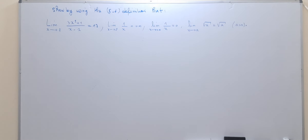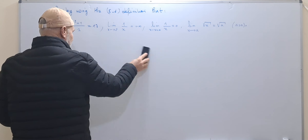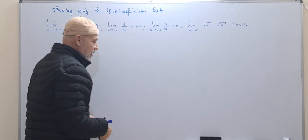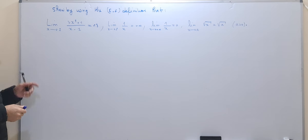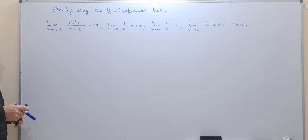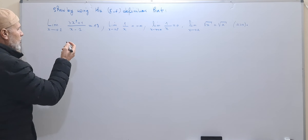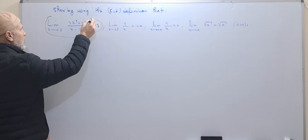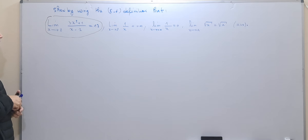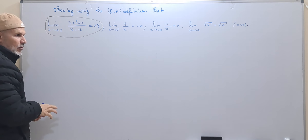Bismillah ar-Rahman ar-Rahim. Assalamu alaykum. Hello everybody. Today the video concerns the use of the epsilon-delta definition to show that the limit of some function goes to some limit value. We will start with this limit: how can we show using epsilon-delta that the limit is equal to 13.